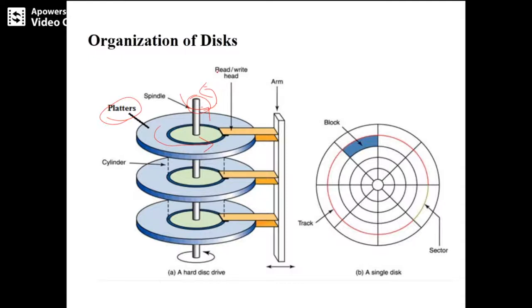We have a concept called the read-write head. The read-write head is a pointer which moves to a particular track and can read content from that track or write something onto that particular track. Each platter has two sides — an upper side and a lower side — so for both sides you will have a read-write head. For one platter, you will have two read-write heads, one above and one below. This read-write head is attached to the arm of the drive.